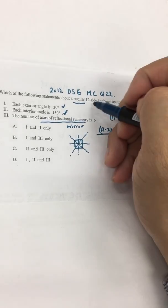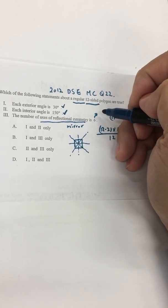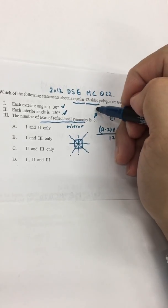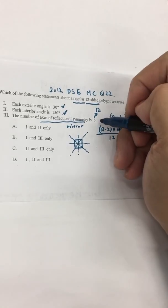Which means that for 12-sided polygon symmetry, which is di-regular, so we supposed to have 12 reflection symmetry. So that's why this one is wrong.